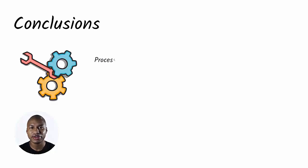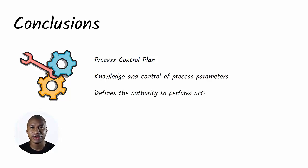In conclusion, the process control plan gives operators the knowledge and control of process parameters. It also defines the authority to perform actions to obtain the best results on the finished product.